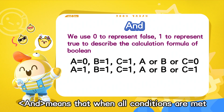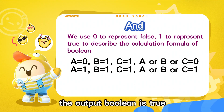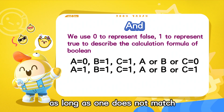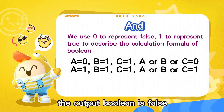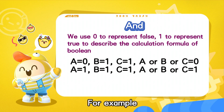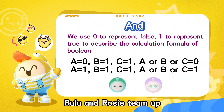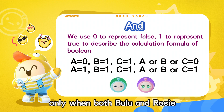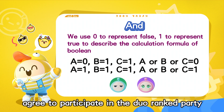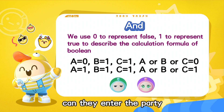And means that when all conditions are met, the output Boolean is true. As long as one does not match, the output Boolean is false. For example, Booleoo and Rosie team up — only when both Booleoo and Rosie agree to participate in the duo-ranked party can they enter the party.